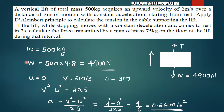Given: mass M equals 500 kg, velocity is 2 m per second, distance is 3 m. Weight W equals 500 into 9.8, that is 4900 Newton.